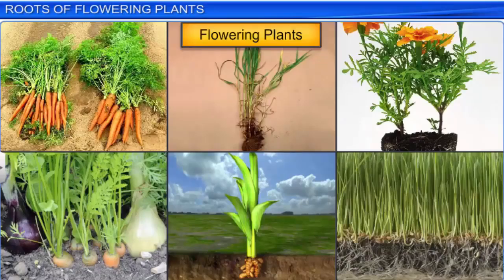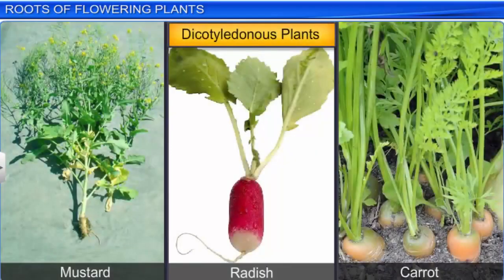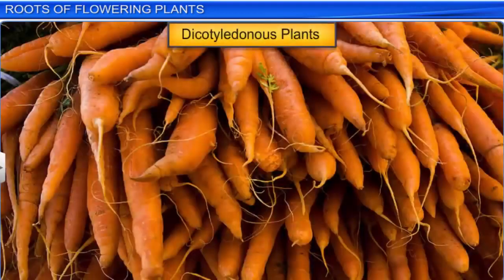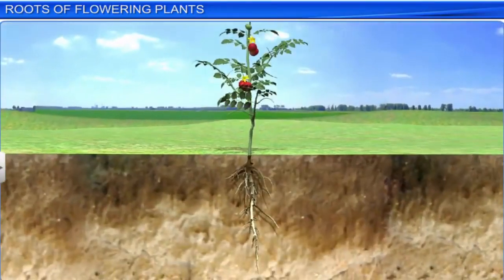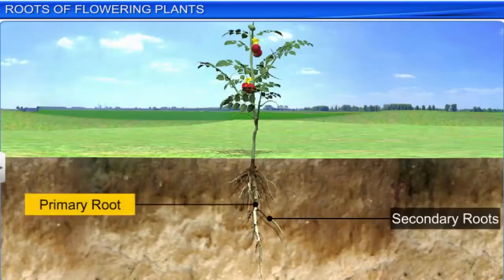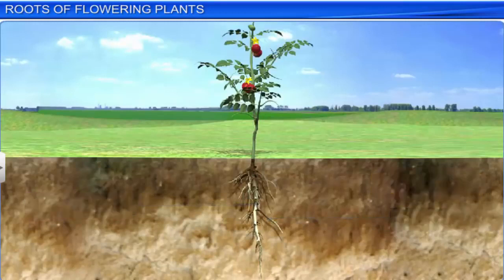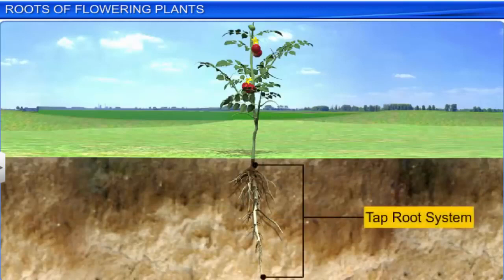There are various kinds of roots in flowering plants. In dicotyledonous plants like mustard, radish and carrot, the embryonic root or radicle grows into the soil to form the primary root. Multiple lateral roots, called secondary roots, emerge from the primary root. These secondary roots further branch into tertiary roots. The primary root along with its branches forms the taproot system.